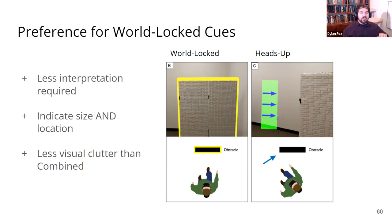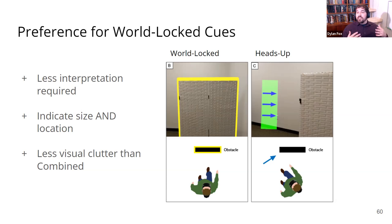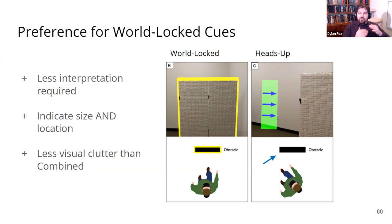The third reason is that there's less visual clutter compared to the combined condition. With world-locked cues, there are just yellow borders to look out for. Whereas with combined, even though you're getting more information, there's a lot more clutter on the screen — yellow boxes and green boxes that you have to interpret separately. Sometimes the combination is less than the sum of its parts.